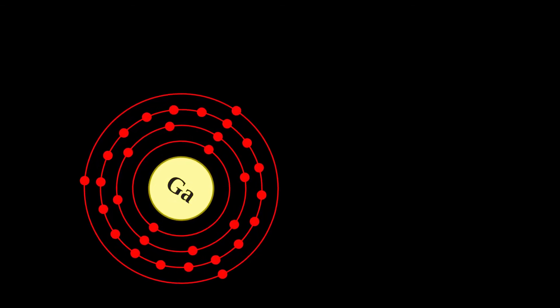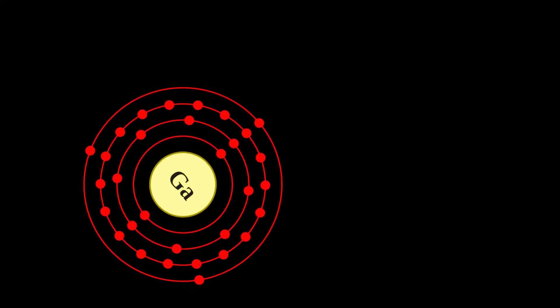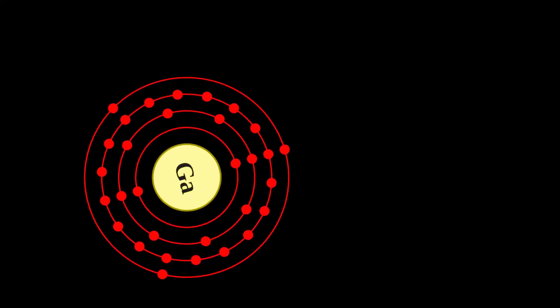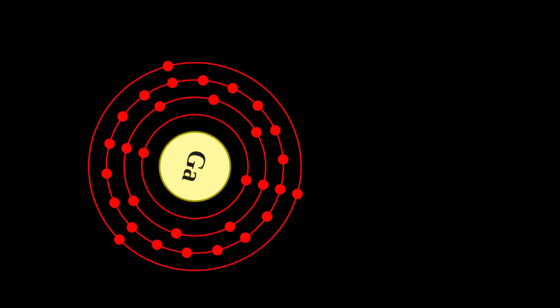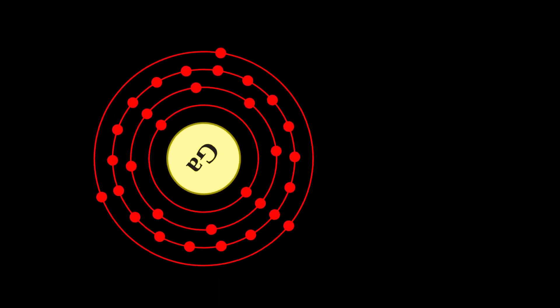Gallium is predominantly used in electronics. Gallium arsenide, the primary chemical compound of gallium in electronics, is used in microwave circuits, high-speed switching circuits, and infrared circuits.